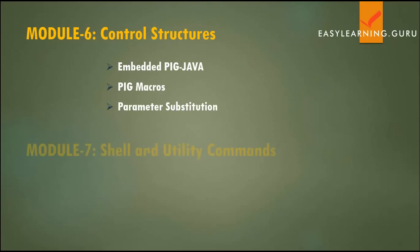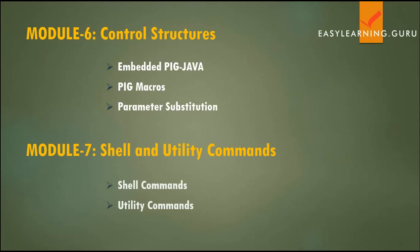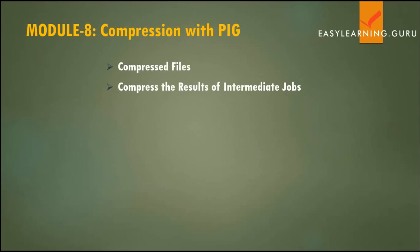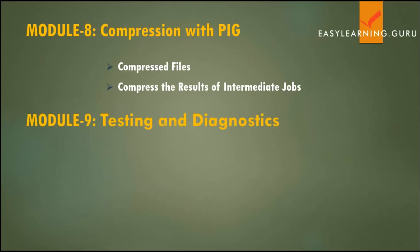Then we have module seven, which covers the shell and utility commands. Then we have module eight, which covers the compression of input, output, and partial results which can be generated between the map and reduce jobs.